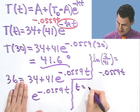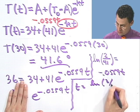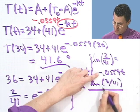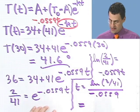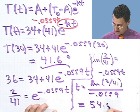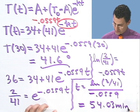So what's T? T equals natural log of 2 over 41, all divided by minus .0559. And you can compute that on a calculator, and you'd get 54.03 minutes. So almost an hour, almost an hour I'd have to wait.